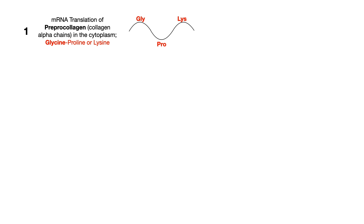Step one is translation of something called pre-procollagen, also known as collagen alpha chains. This occurs in the cytoplasm. If you're taking your exam and you see pre-procollagen or the term collagen alpha chains, the test writer is referring to the same thing in step one. The most important residue on pre-procollagen is glycine. In addition to glycine, you can also have proline or lysine. This is sometimes written as glycine-X-Y, meaning you always have glycine, and X or Y is typically proline or lysine.